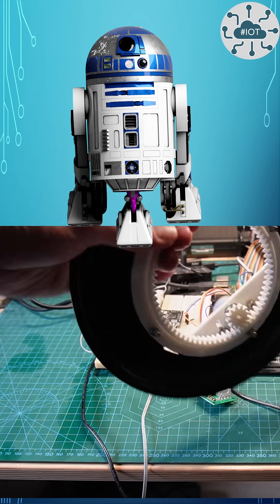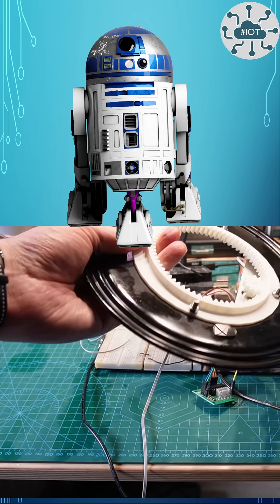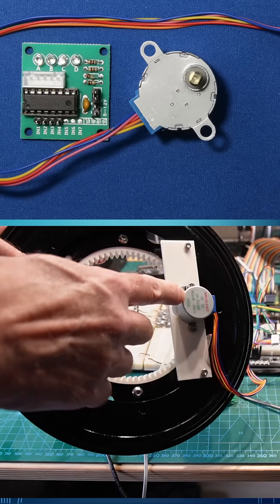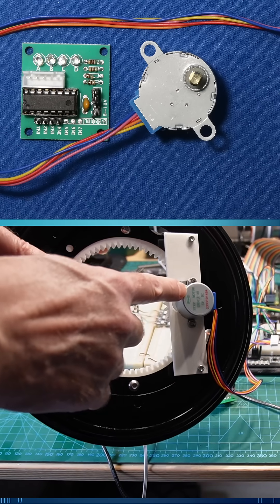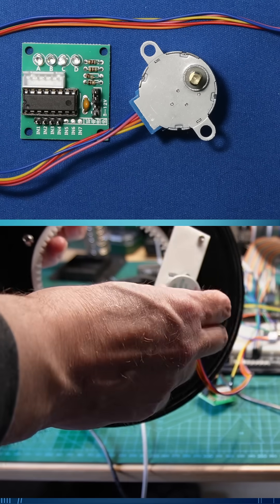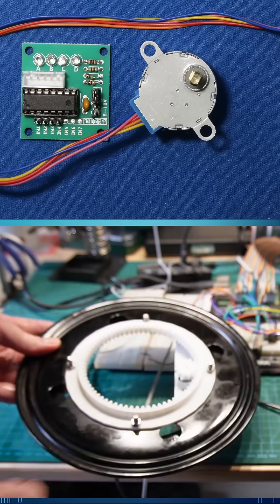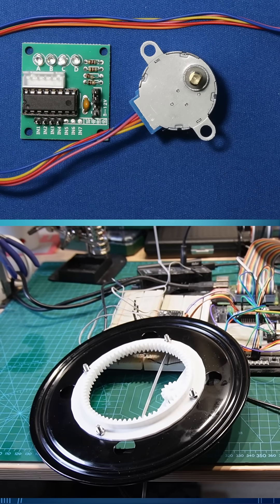And I then attached a 24 BYJ 48 stepper motor to it, which seems to be powerful enough to drive it around quite well, and it's what I'm going to at least start. I can upgrade that to a Nemo 17 if I need to.